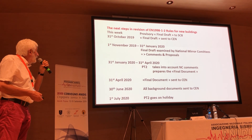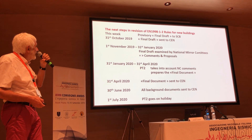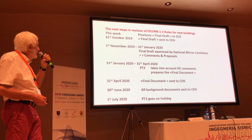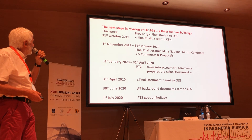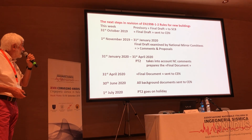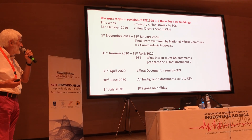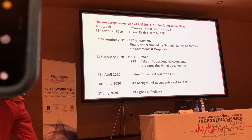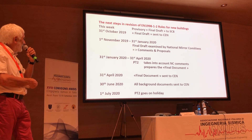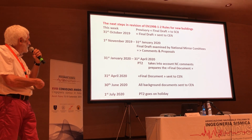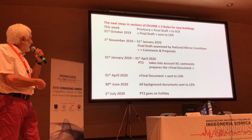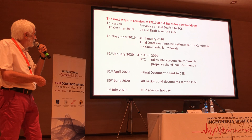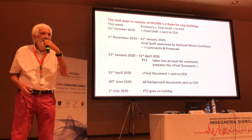Regarding the current timeline: this week, the provisional final draft will be sent. By 31st October, the final draft goes out. From 1st November to 31st January, national committees examine the final draft and send comments and proposals. Then PT2 has three months to consider comments and prepare the final document, to be sent by 31st April. Background documents supporting decisions within the code will also be delivered, with completion by 1st July.